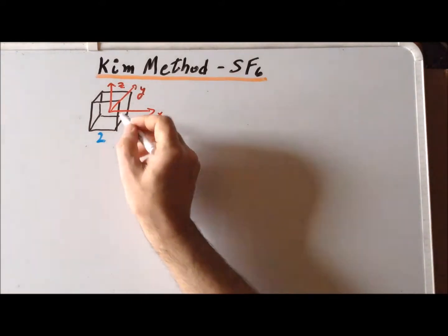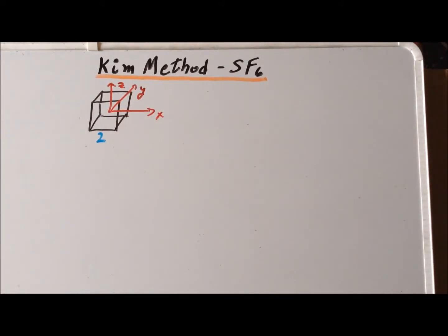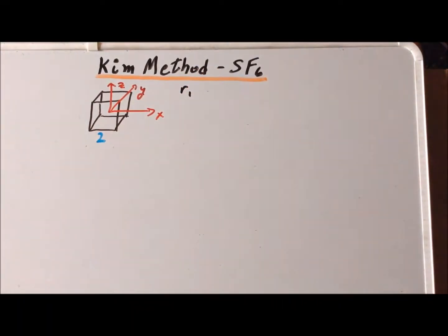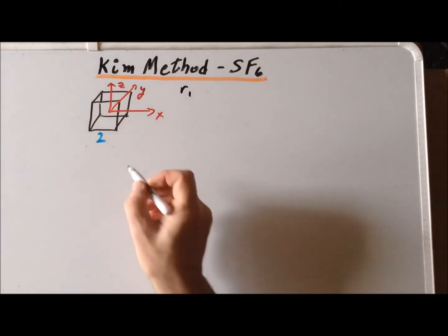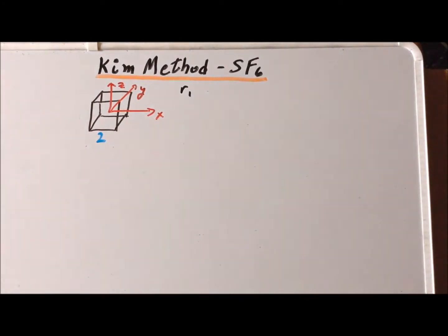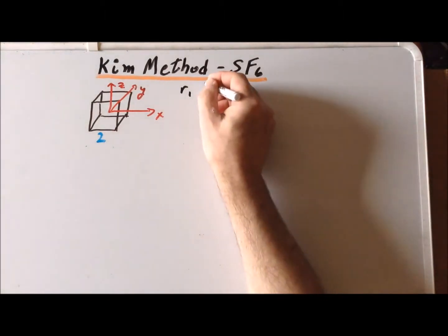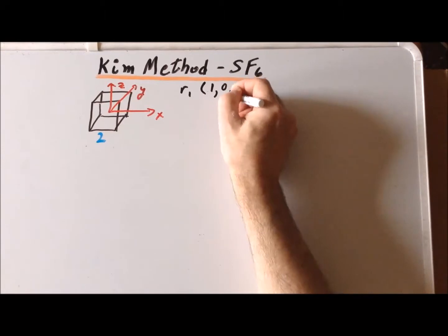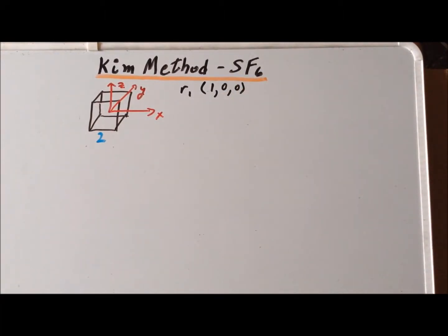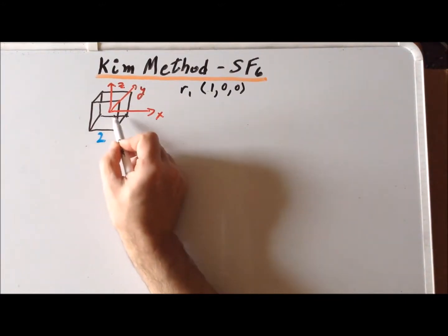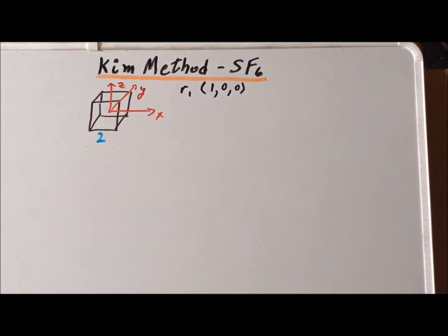Next, we want to label each of the six fluorine atoms R1 through R6, and we want to assign each of these fluorine atoms particular coordinates. We set up the first fluorine atom to be at the center of the right face of the cube. So that gives it the coordinates x=1, y=0, z=0. We are going to use the fact that we can think of a point as a description of a vector going from the origin to that particular point.